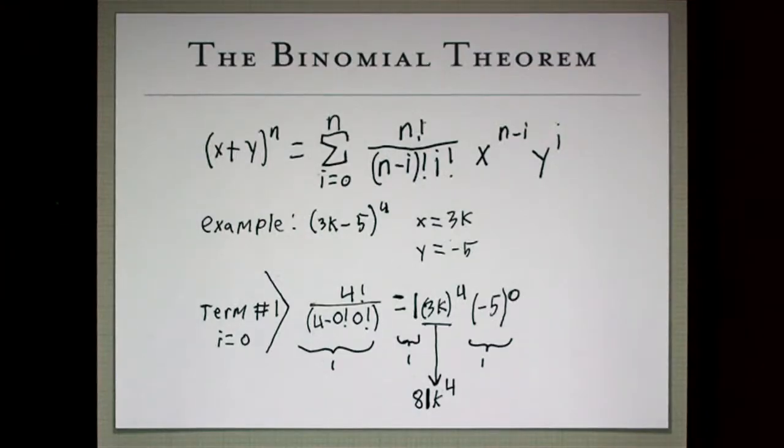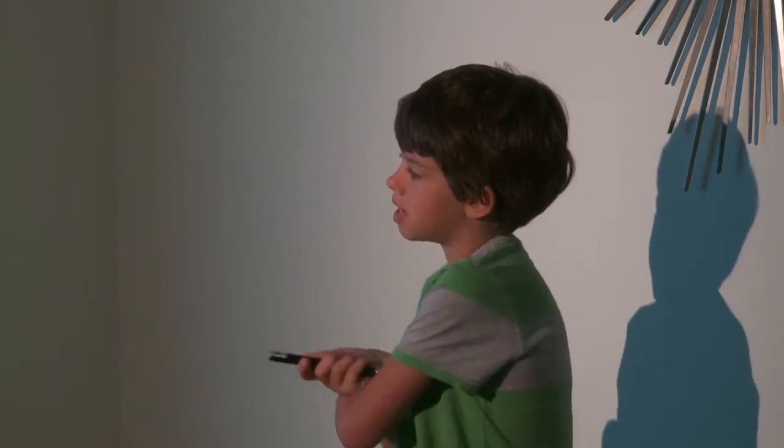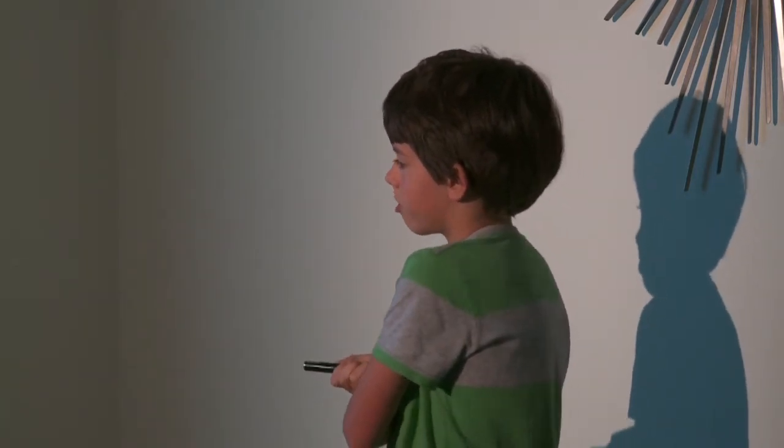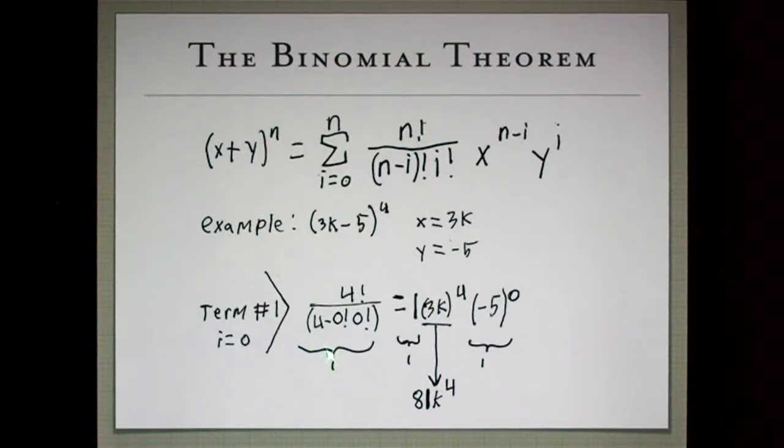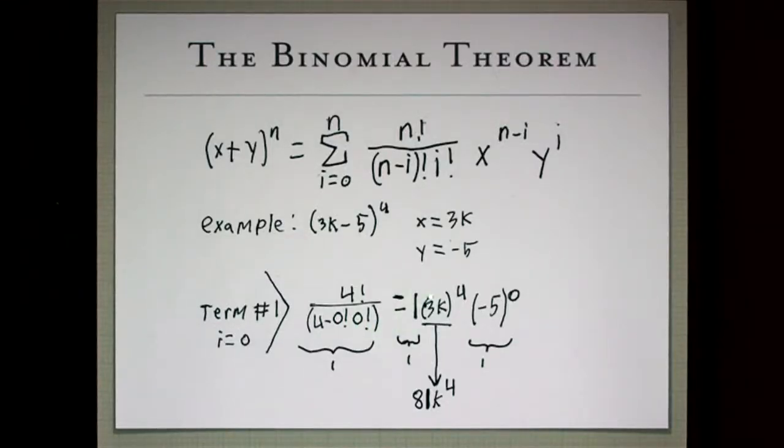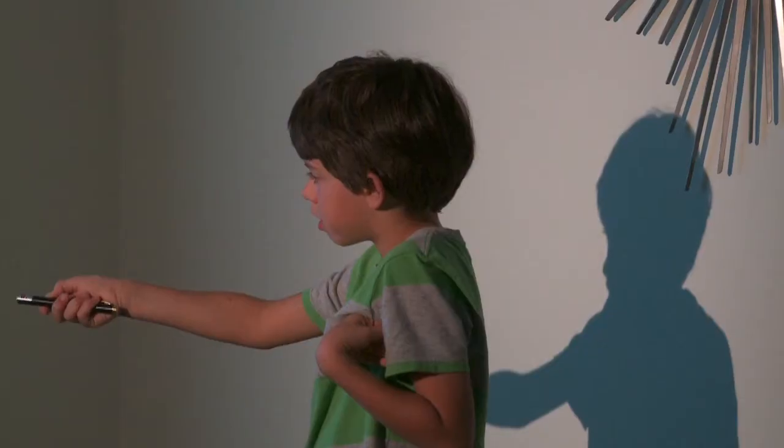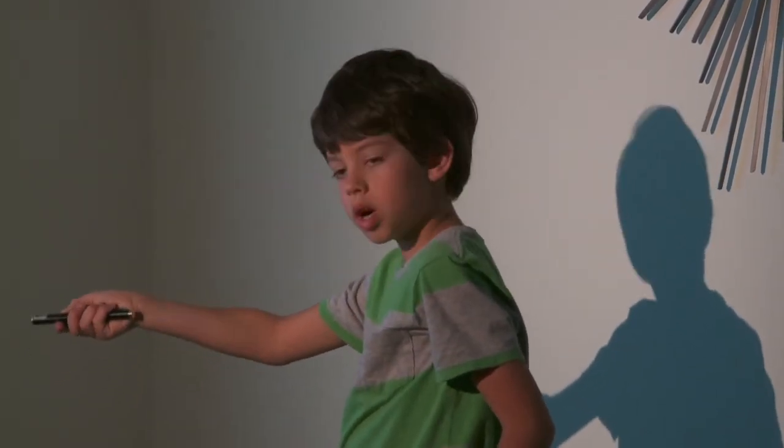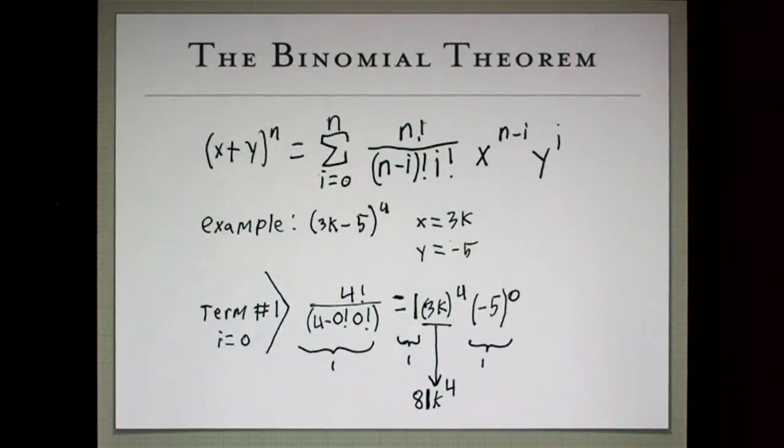So our first term, i equals 0. Now using the equation, and our n is 4, we get 4 factorial over 4 minus 0 factorial times 0 factorial. And this all boils down to, the bottom is 1, so we know that those simplify to 1. Then we use our variable maker as we get 3k to the 4th, because our i is 0, so it's 3k to the n, 3k to the 4th times negative 5 to the 0, which is 1. So it's just 3k to the 4th times 1 is 81k to the 4th. 81k to the 4th is our first term.